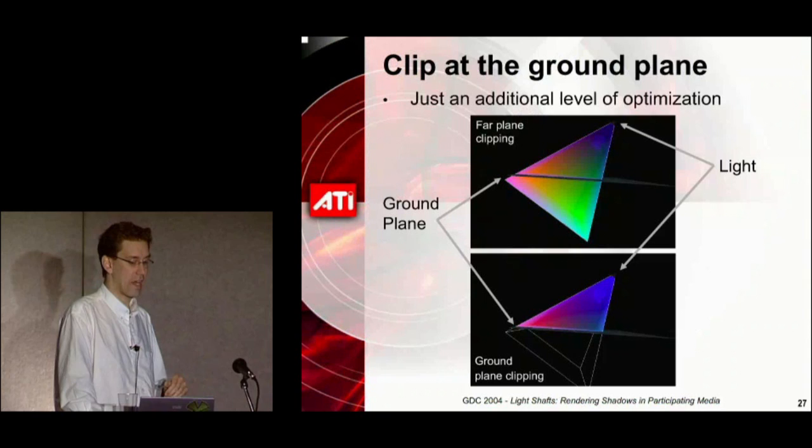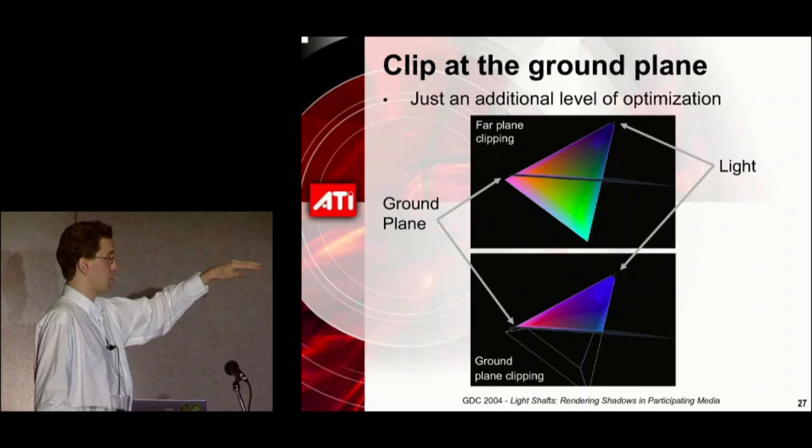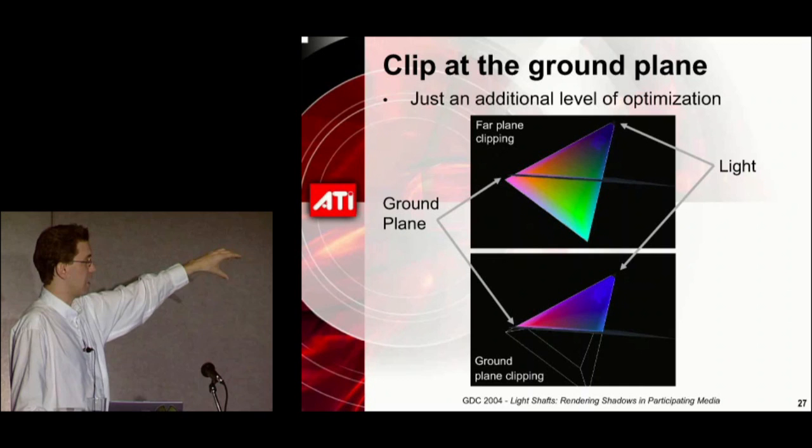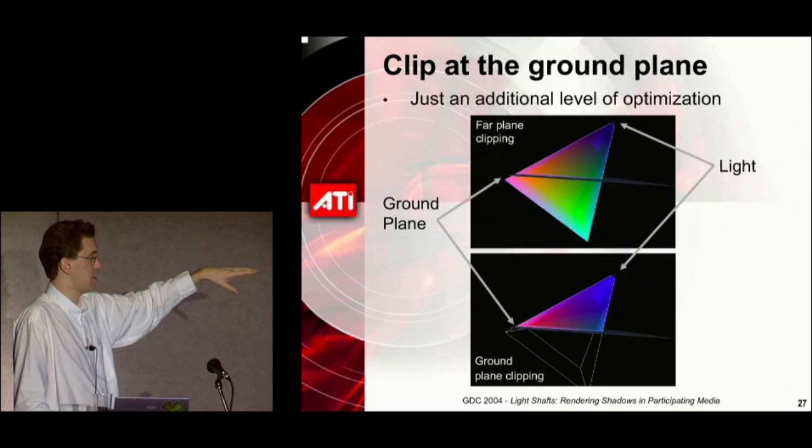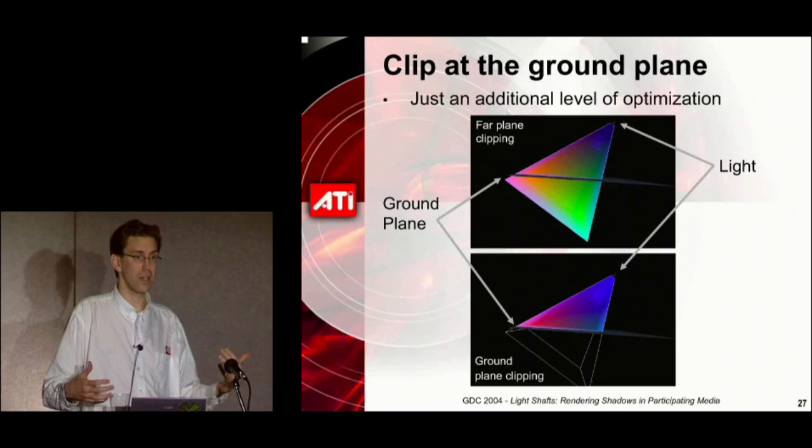Depending on what you know about your scene, rather than clip at the far plane of that frustum, just clip at the ground plane instead. If you think back to Debashi and Nishita's church scene, instead of clipping at the front plane of their frustum, they might have clipped at the wall of the church — anything to reduce that bounding volume of light and hence reduce the fill rate of the sampling planes when you draw them.